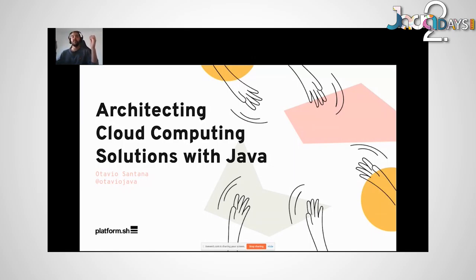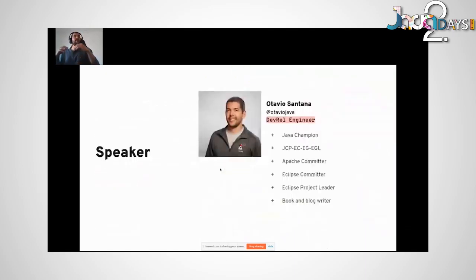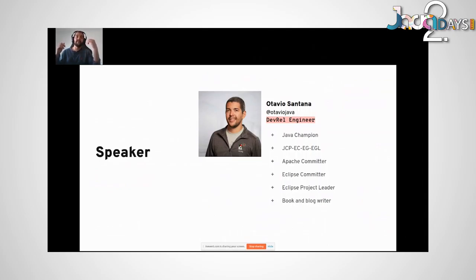My Twitter handle is Otavio Santana and I'm working right now at Platform.sh. Basically, if you want to put your application smoothly in the cloud, you can use us. Platform.sh is a PaaS — platform as a service — where you can put any kind of application you wish, whether microservice, monolith, or whatever. I'm a Java Champion, executive member of the JCP, Apache committer, Eclipse committer, and Eclipse project leader. On my free time I write books and blogs about technology.